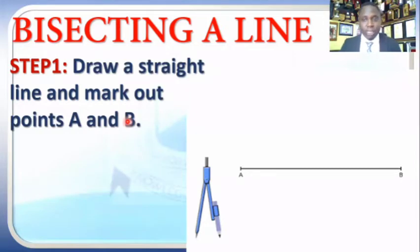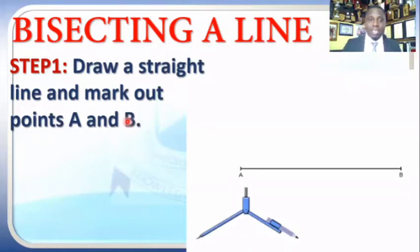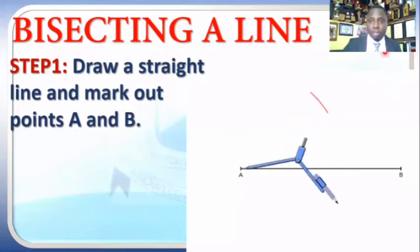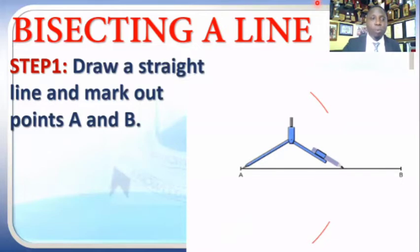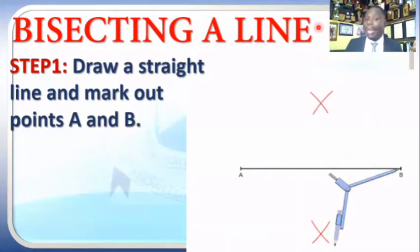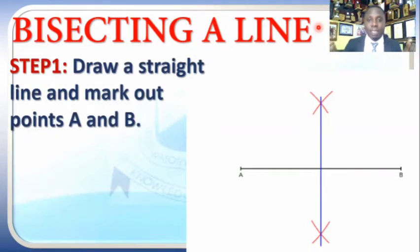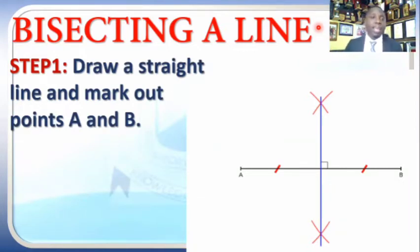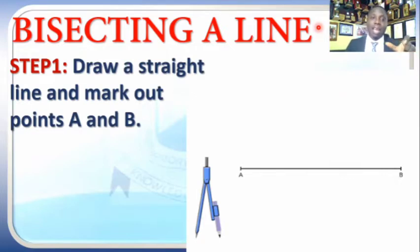Let's say we want to bisect a straight line AB. The first step is to draw a straight line and mark out points A and B. In very good cases, you are given a distance between A and B. For example, let the distance between A and B be 10 centimeters. So you draw a line, place your ruler on it and mark out your 10 centimeters at point A and your point B.